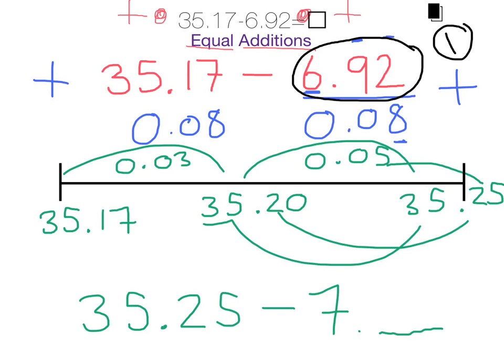Our second step was to make sure that we were being equal. Because we added 0.08 to this number, we also needed to add 0.08 to this number. And that was our second step.